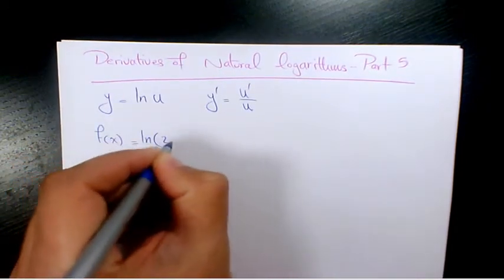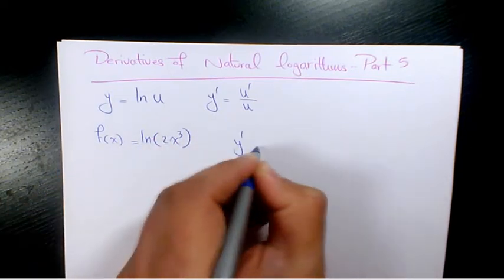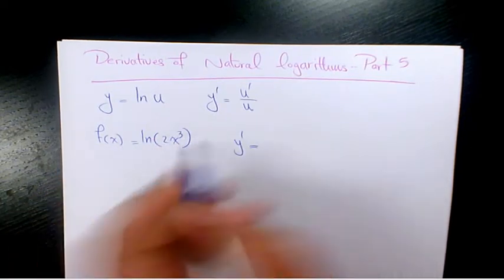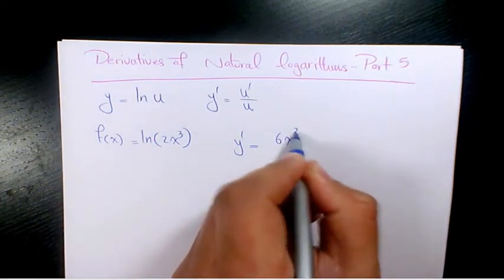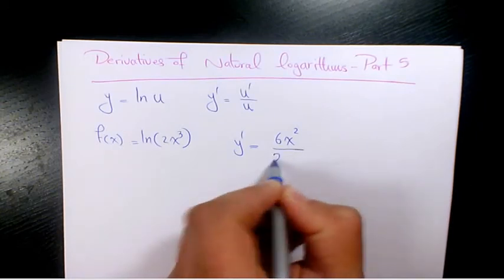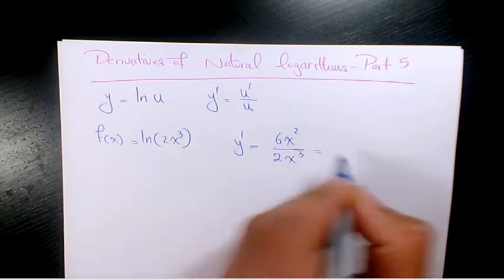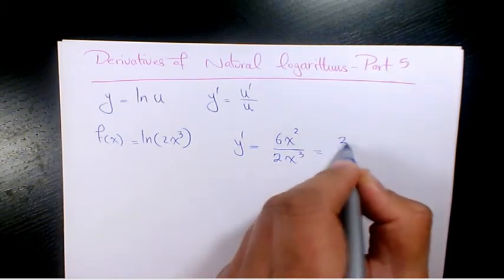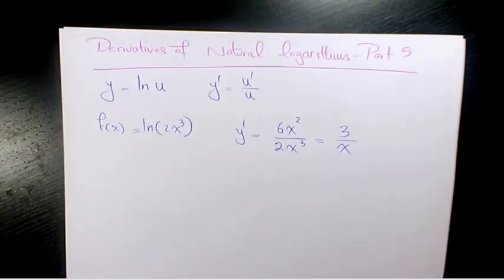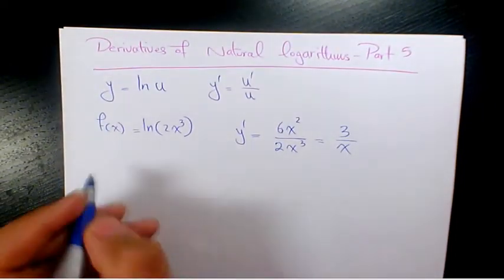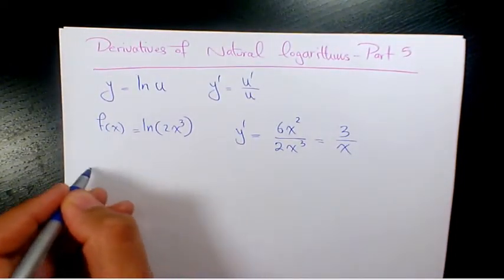For example, if f of x is ln of 2x cubed, y prime is going to be 6x squared over 2x cubed, which will be 3 over x when you reduce.